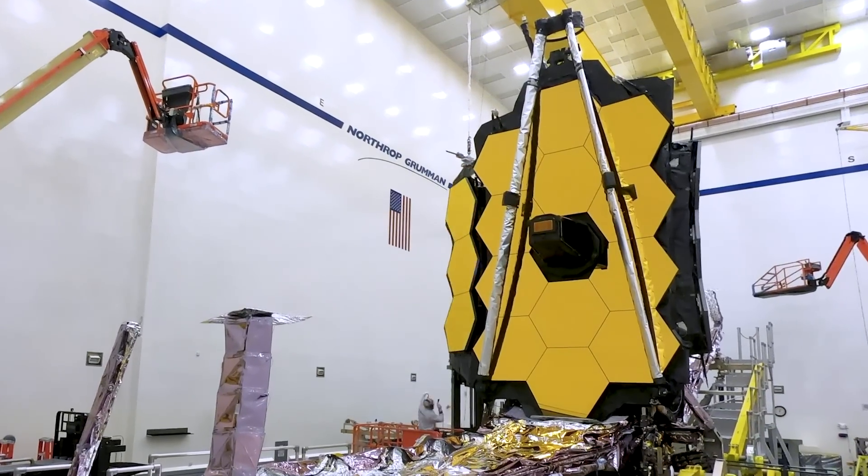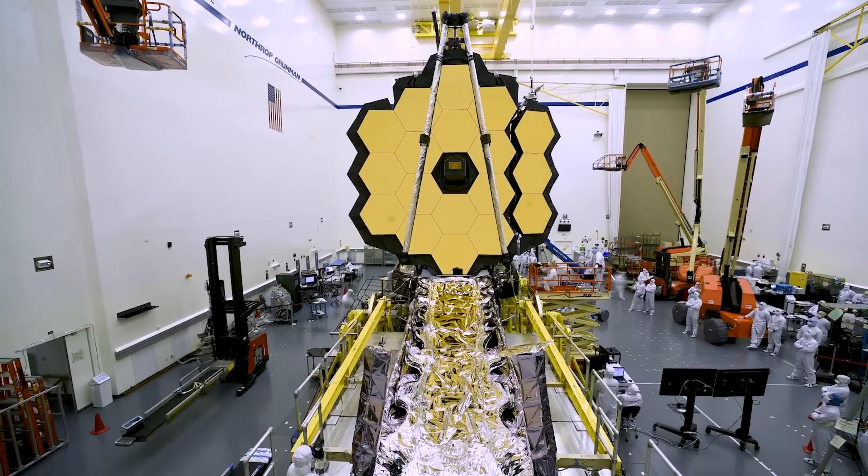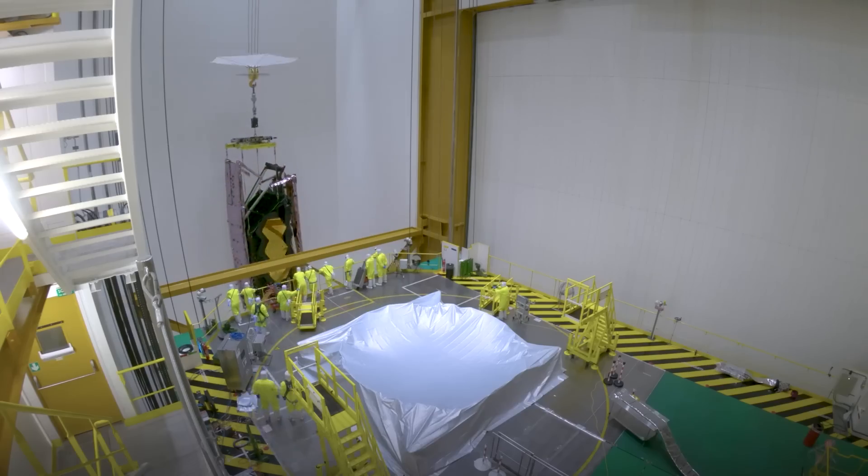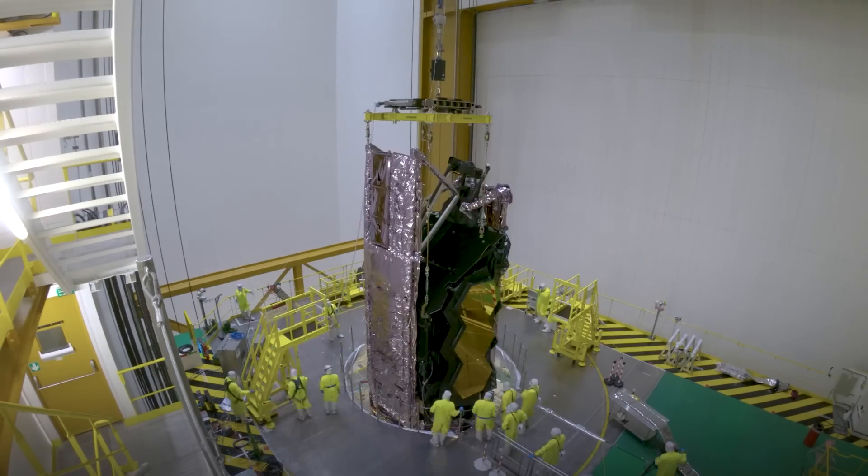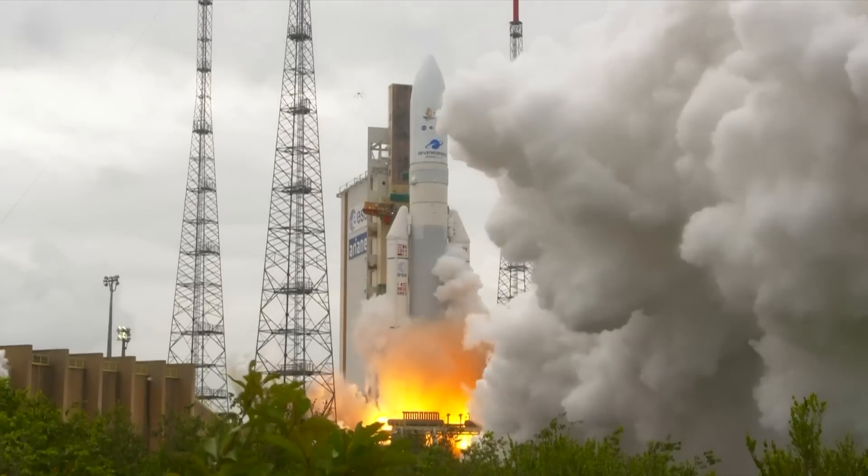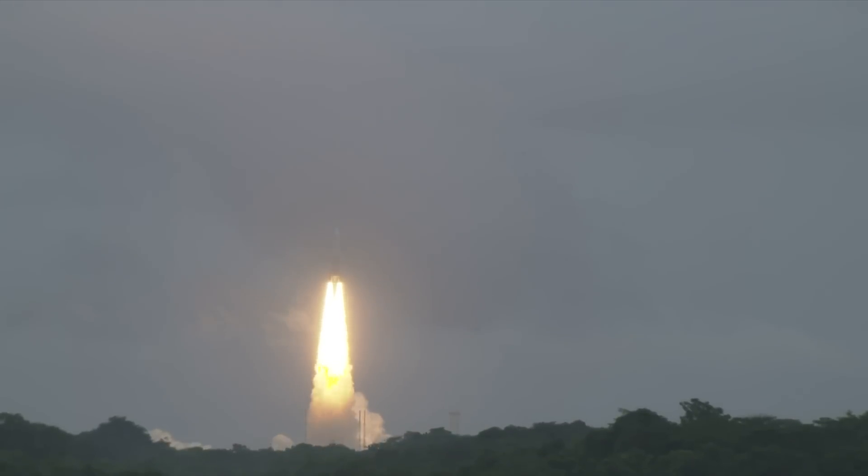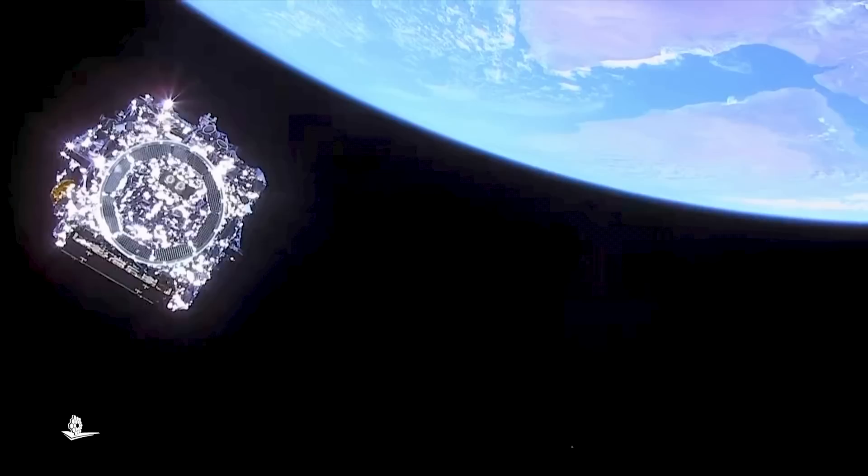So what the scientists and the engineers came up with was to fold both the mirror and the sun shield, to put it inside the rocket, and then once in space it will deploy, it will expand. This process took around two weeks, and it was a very nerve-wracking process. Luckily nothing failed. Everything worked perfectly. And we have James Webb in the position and in the form that we wanted.